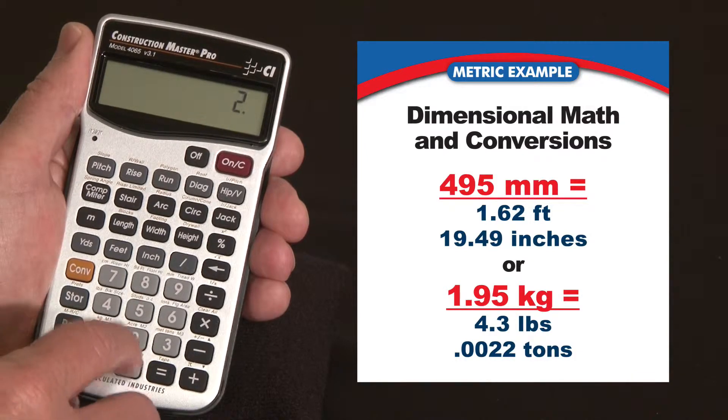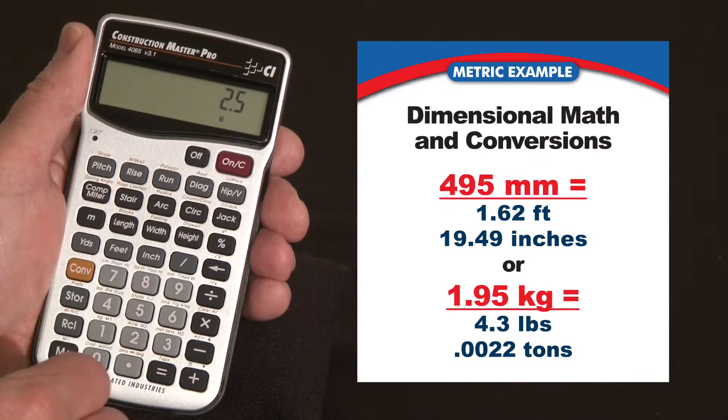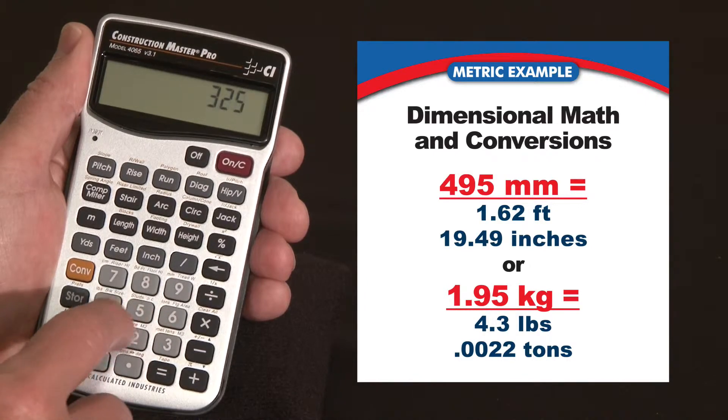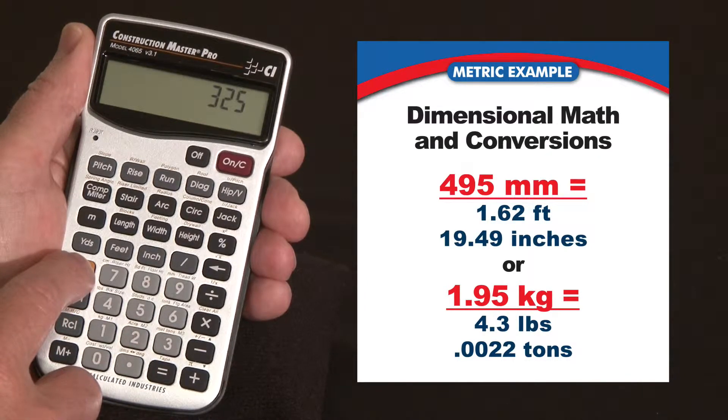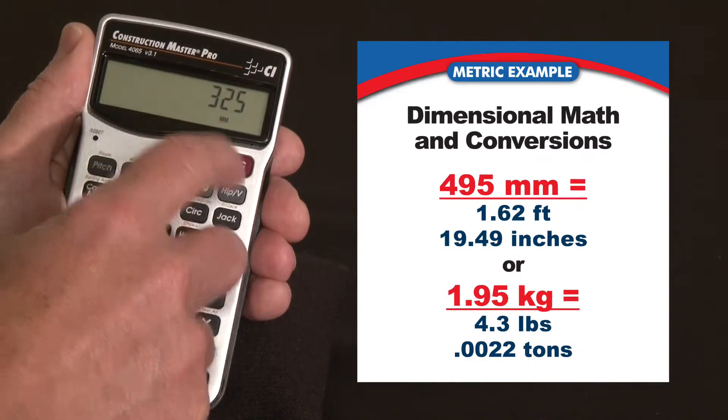Let's show you how to enter a value. 2.5, and you just label it meters. 325 millimeters. Now the millimeters is the second function above the 9. I just hit convert 9, 325 millimeters.